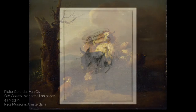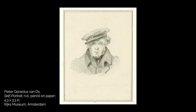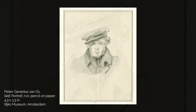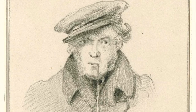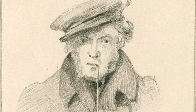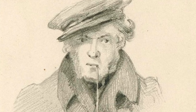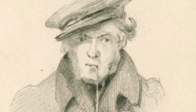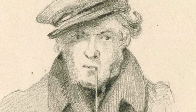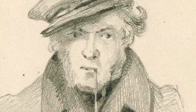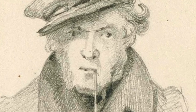Peter Gerardus van Oos was born to an artist's family in The Hague, a Dutch town near the North Sea, on October 8th, 1776. He learned to paint by studying with his artist father Jan van Oos in the 1790s. His mother Susanna de la Croix, his sister Maria, and his brother Georges were also artists.